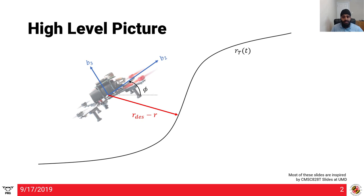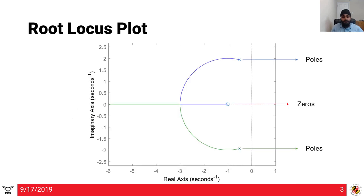Before we start deriving the equations of a quadrotor controller, let's understand the basics of controls in general. Let's start with the root locus plot. It's a plot of some system parameters that depicts how stable or unstable your system is. We can comment on the stability of the system just by looking at the positions of zeros and poles in a root locus plot. We'll talk about these terms in the next slide.